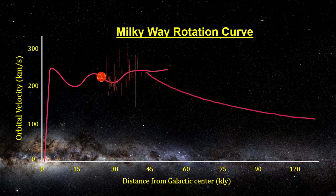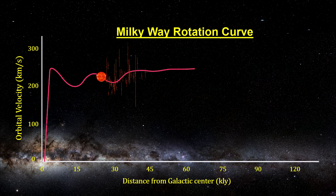If our current theory of gravity holds up for galactic distances, then this curve tells us that our model of the Milky Way is missing something.